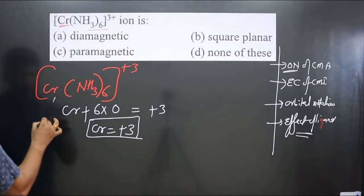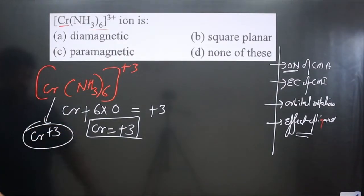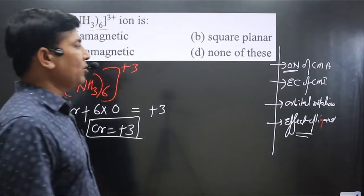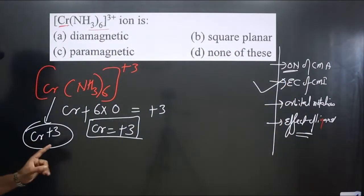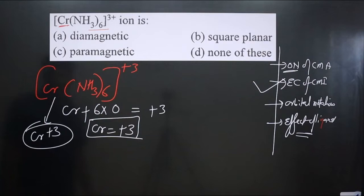From here, we got chromium present in plus three oxidation number. Next step we follow: writing electronic configuration for the central metal ion. It is present in ionic form if we consider its charge.